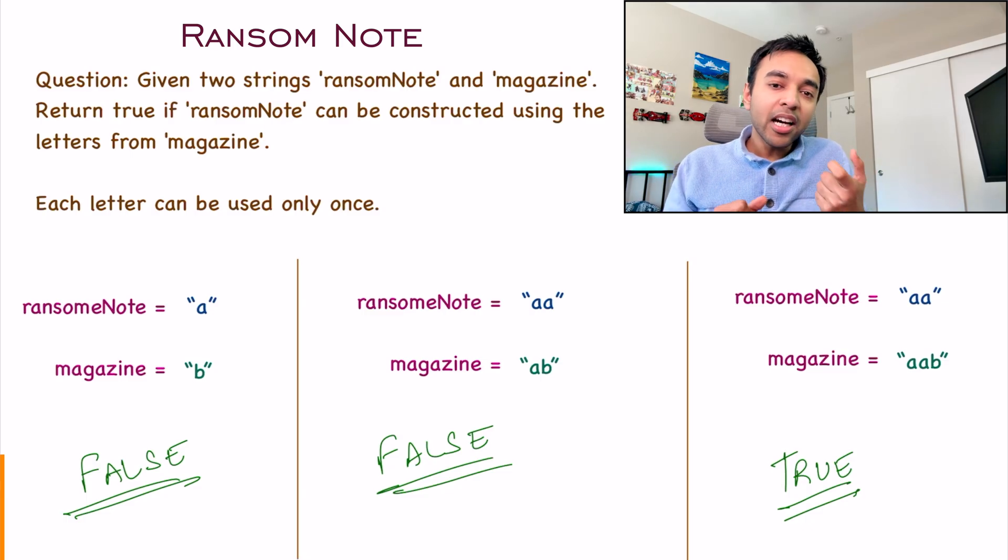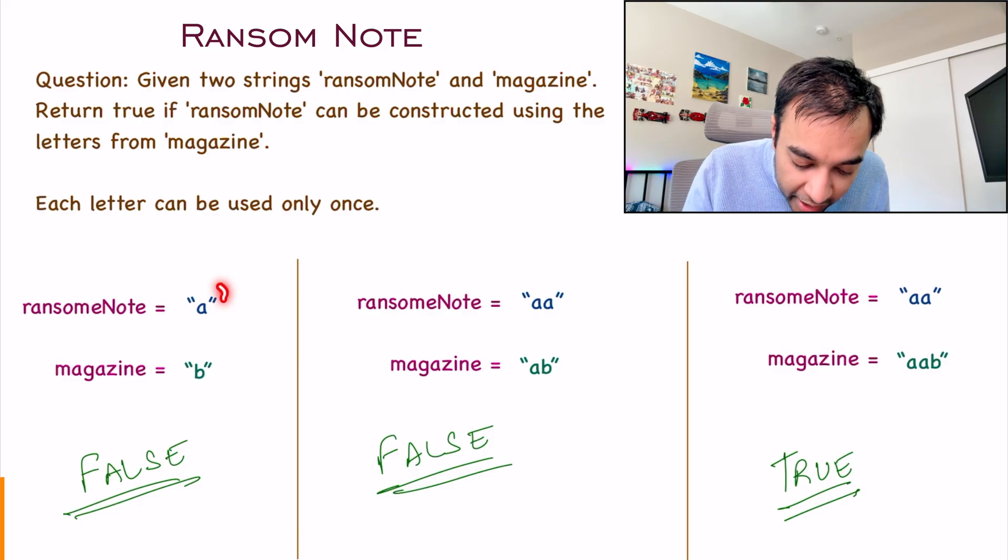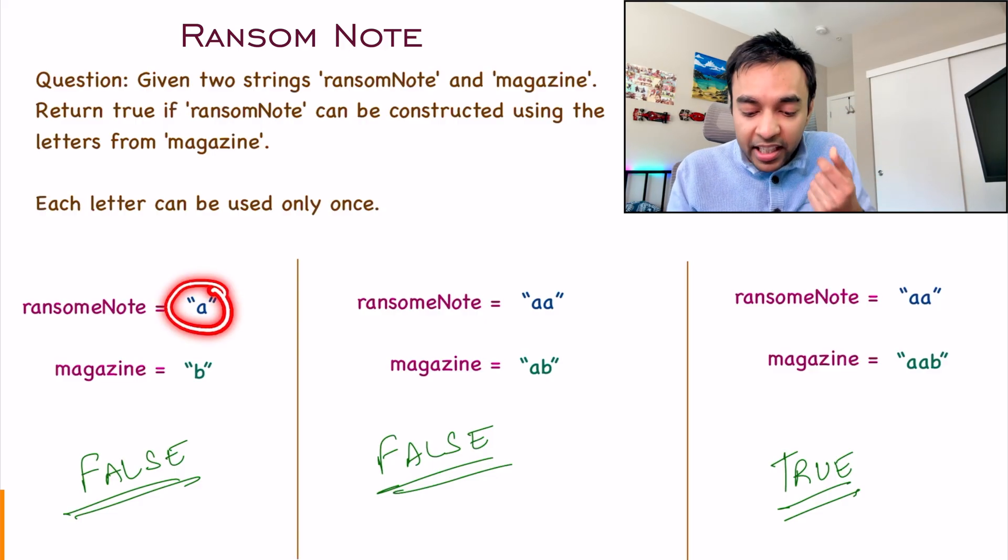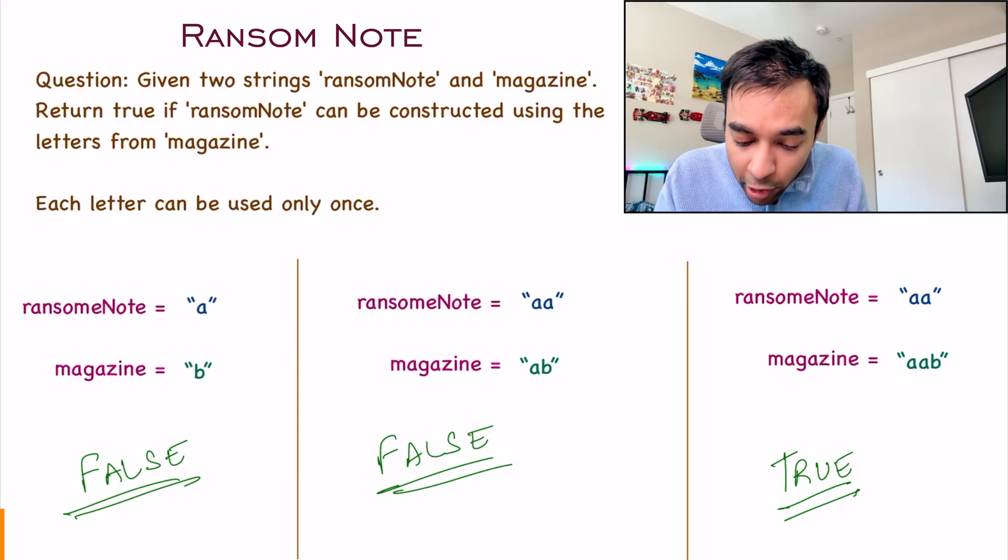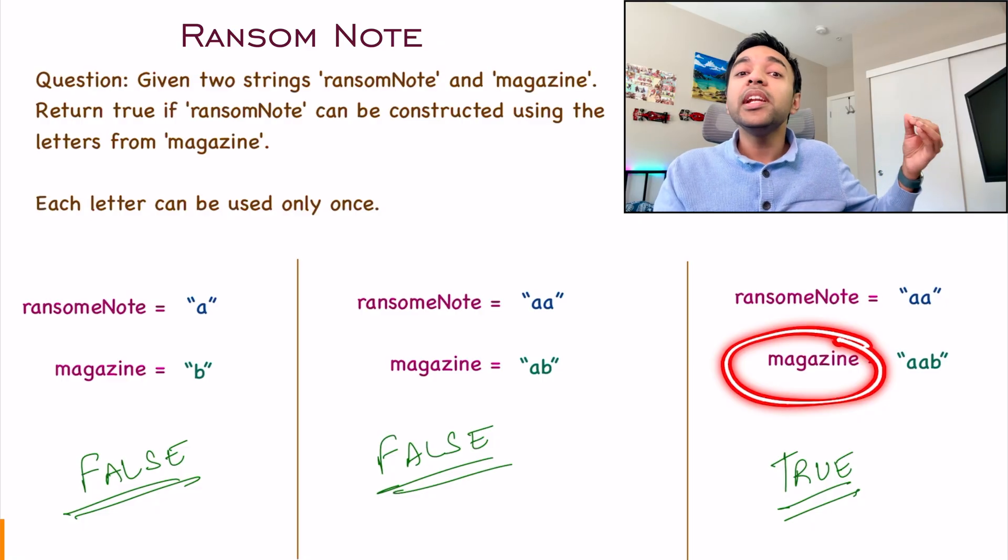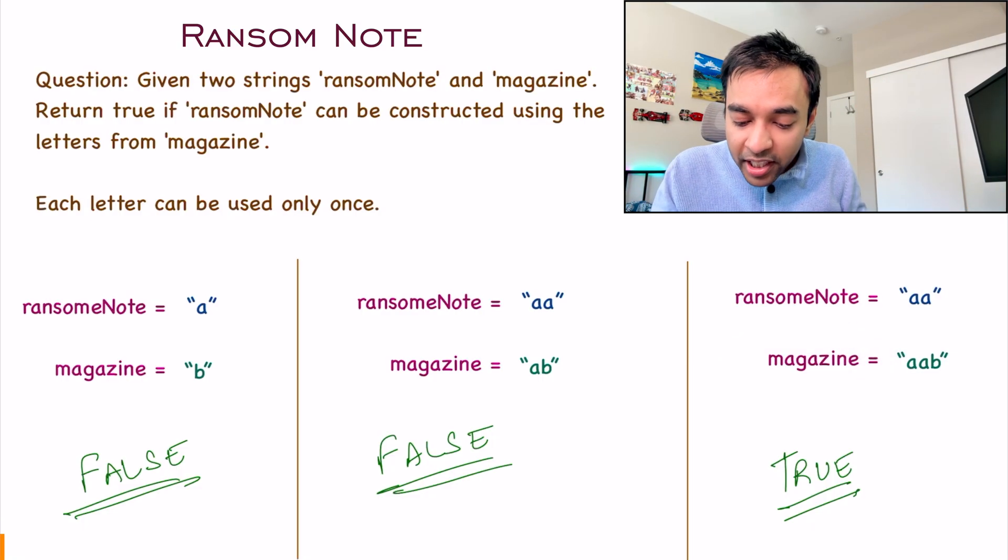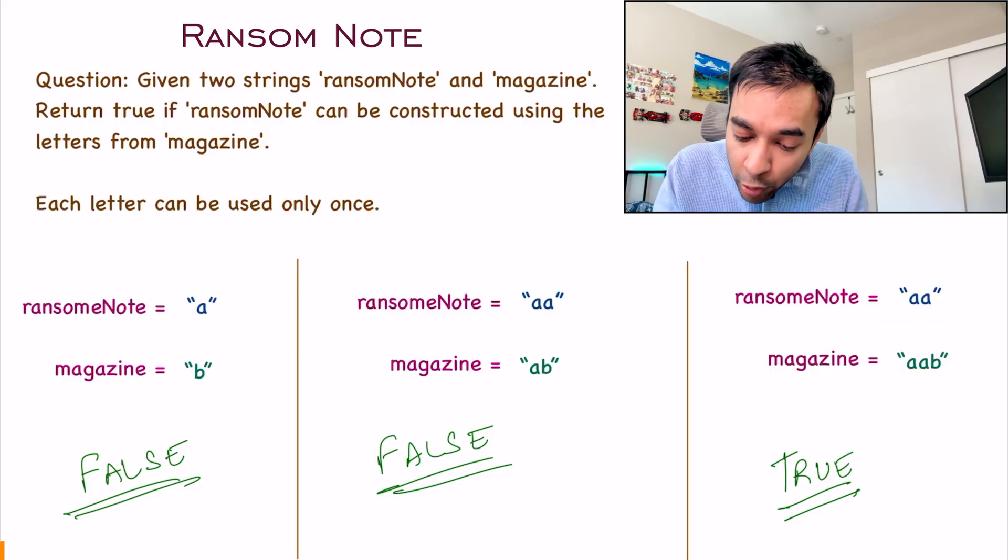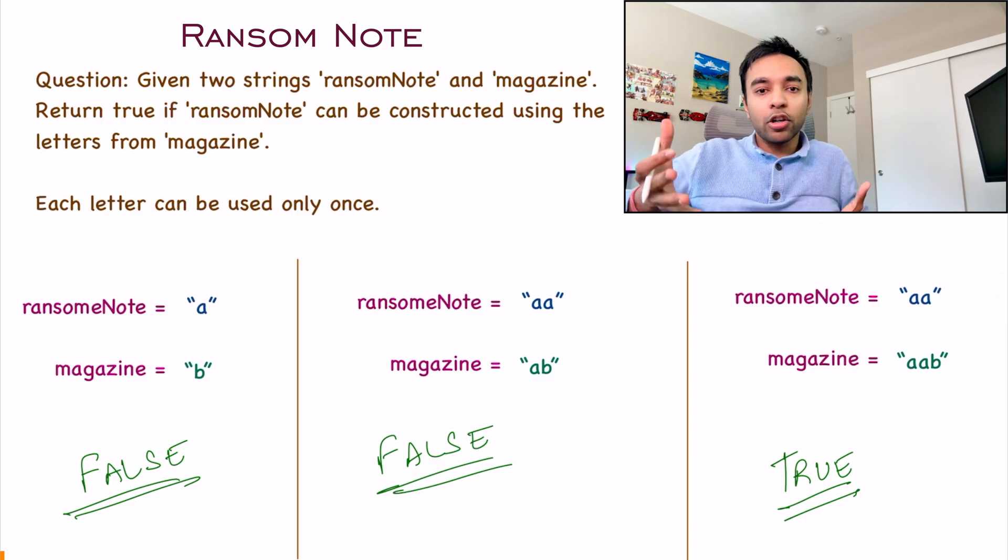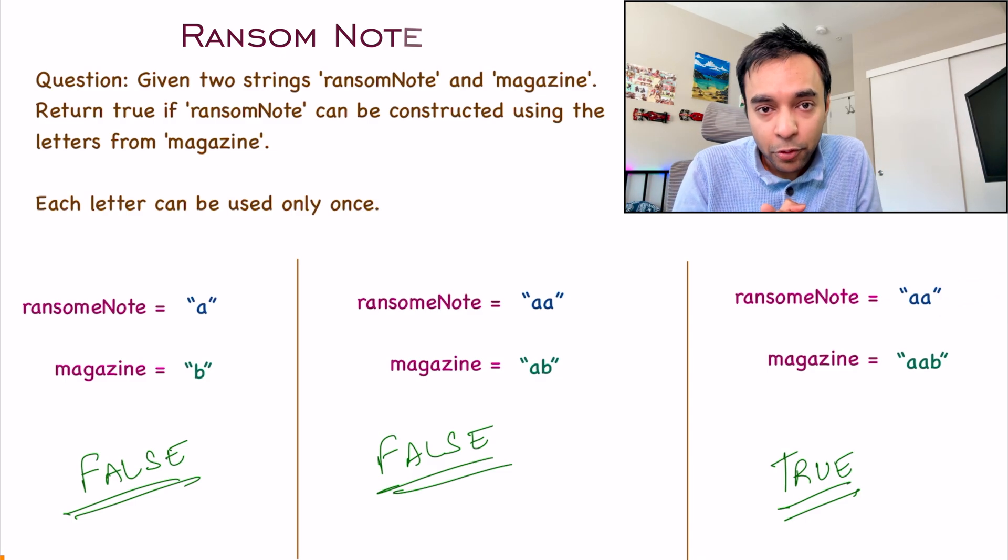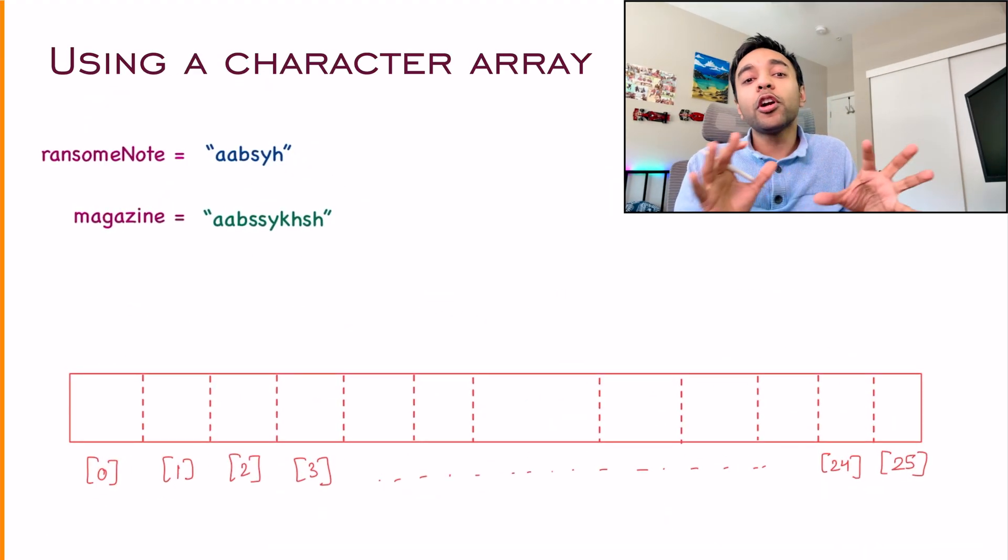It's now quite obvious that a brute force solution will take a lot of time. In a brute force solution, you look at a character and count how many times it appears in your ransom note. For example, you get character A two times. Then you look at magazine and count how many times you get the same character. If you get it more than or equal to the same count, then you can construct it. Similarly, you go to the next character, then the next, then the next. This will end up taking a lot of time.